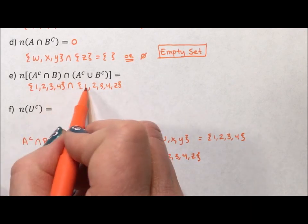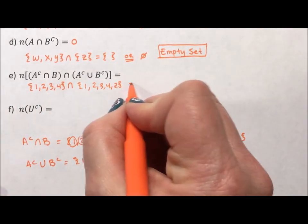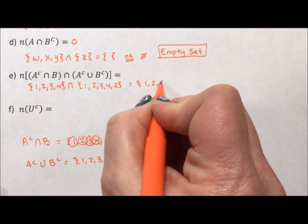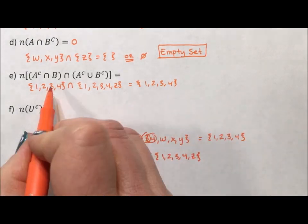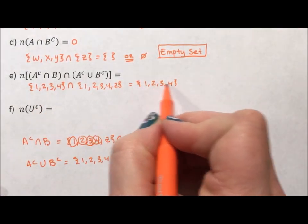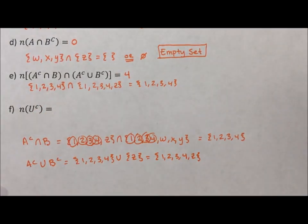And intersection says, what do these two sets have in common? Well, they have in common 1, 2, 3, 4. So they have 1, 2, 3, 4. They have four elements in common.